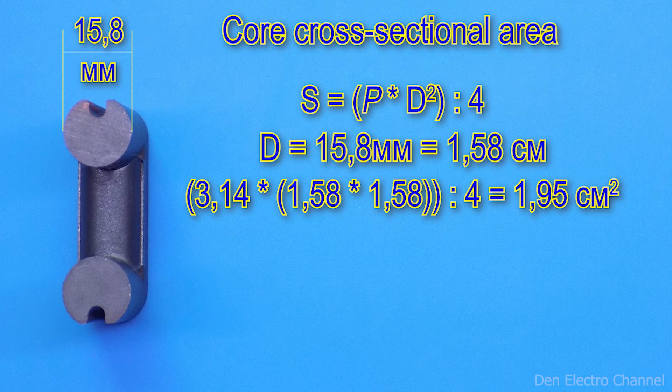First, we multiply 1.58 by 1.58 and then multiply the resulting amount by 3.14. Then we divide everything by 4 and get the cross-sectional area of the core. In this example, it is 1.95 centimeters squared.